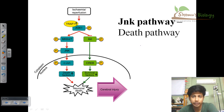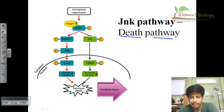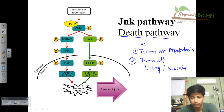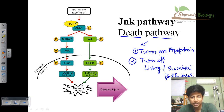JNK pathway is a type of death pathway, and we'll see how it works. Like every death pathway inside the cell, they have to do two important tasks. One is that they need to turn on apoptosis or programmed cell death. The second thing they need to establish is to turn off all those living or survival pathways. These are the two important things a death pathway should do.